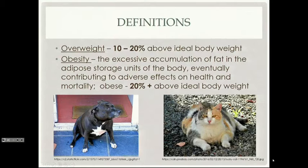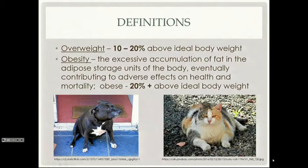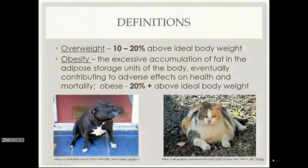Quick definitions — throughout the semester we've talked about animals being overweight and animals being obese, but it's important to know what those terms mean. They are actually clinically defined. Overweight is 10 to 20% above ideal body weight. The ideal body weight is the part that is often relatively hard for an owner or even a clinician to really get at, because if we think about it in human terms, the ideal body weight of a football player would be very different than the ideal body weight of someone of similar size and stature who doesn't work out to that intensity every day.